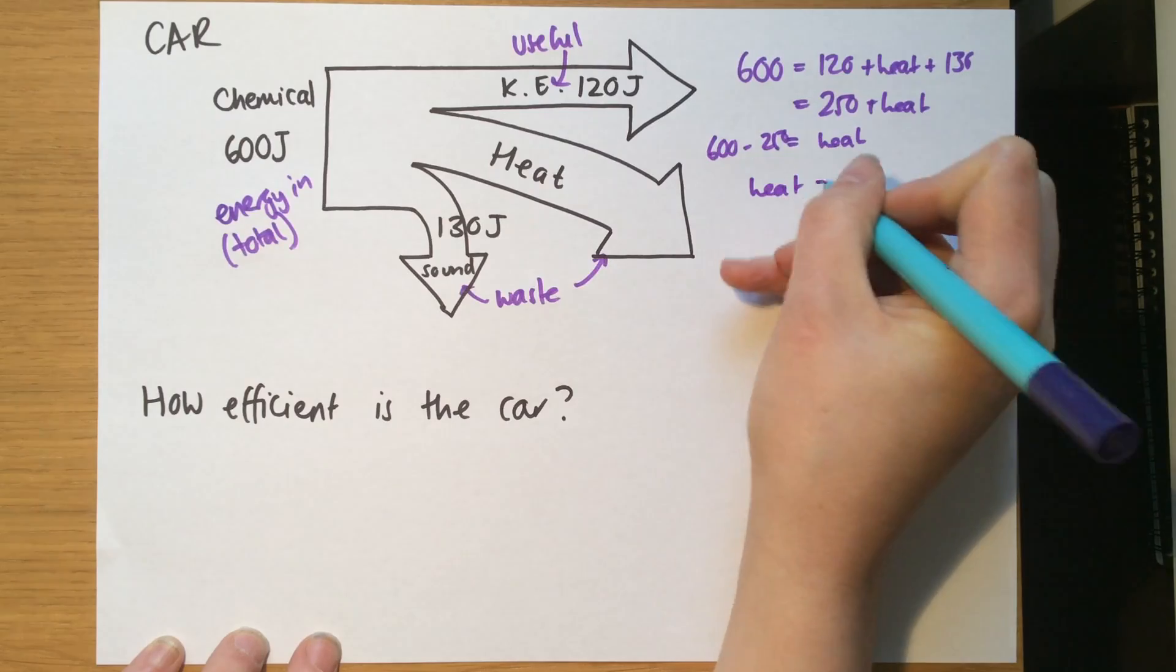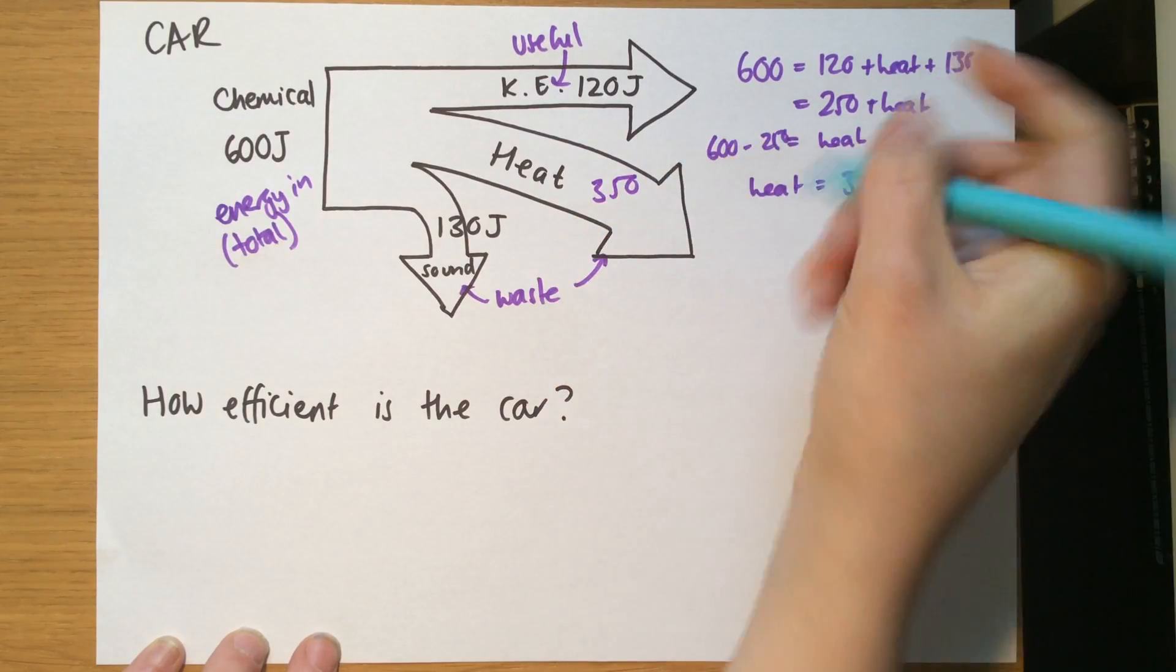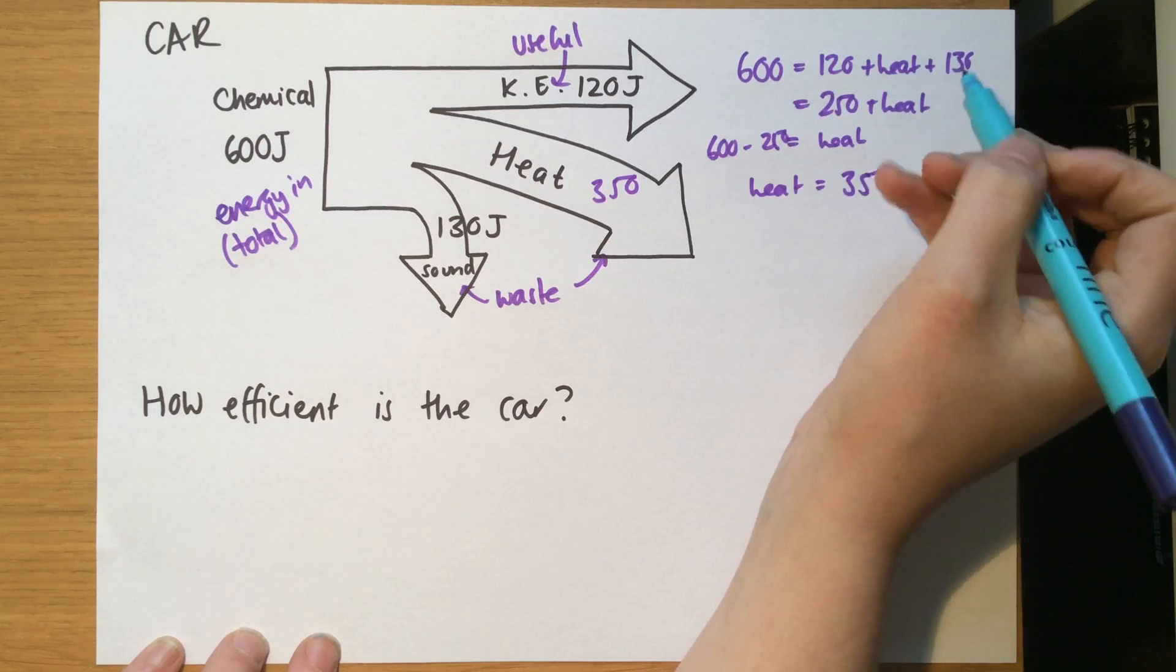That means that 600 minus 250 equals the heat. The heat energy is equal to 350. So 350 joules are wasted as heat.